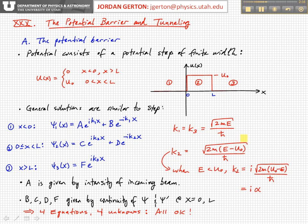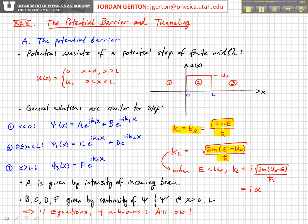In the barrier region, when x is between 0 and L, we have the solution psi₂ equal to another amplitude coefficient C times e to the i·k₂·x, plus D times e to the minus i·k₂·x. And k₂ is equal to the square root of 2m(E − U₀) divided by ℏ. Then finally, in region 3, psi₃ is equal to amplitude coefficient F times e to the i·k₃·x, and k₁ equals k₃ because U is 0 there.